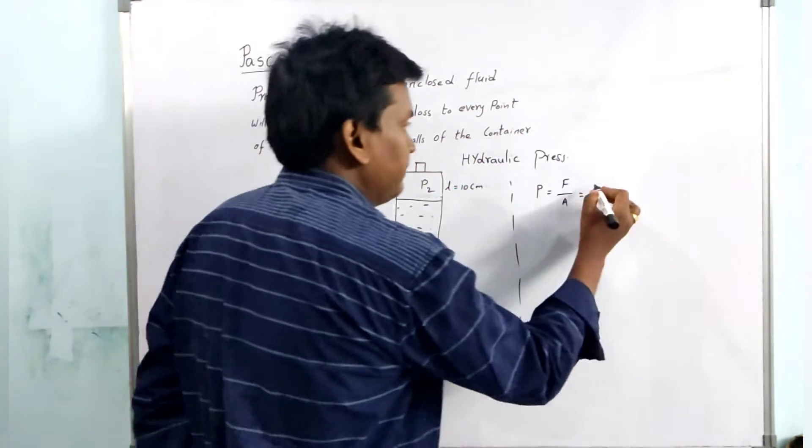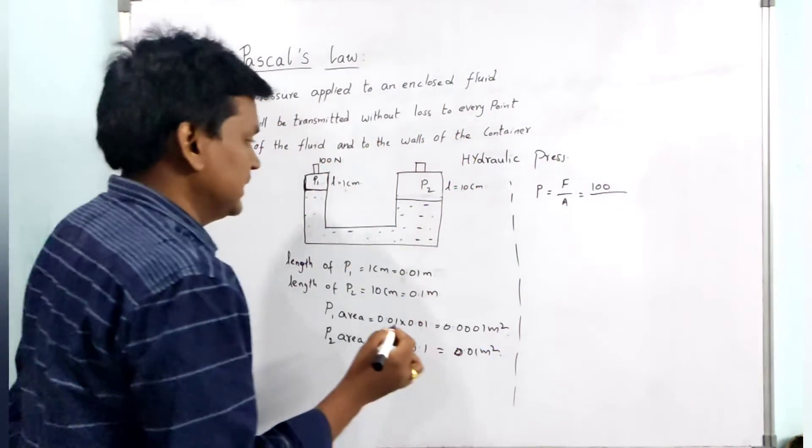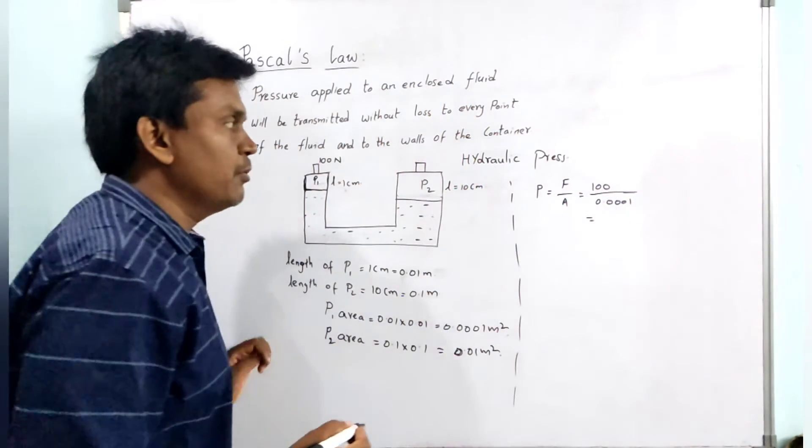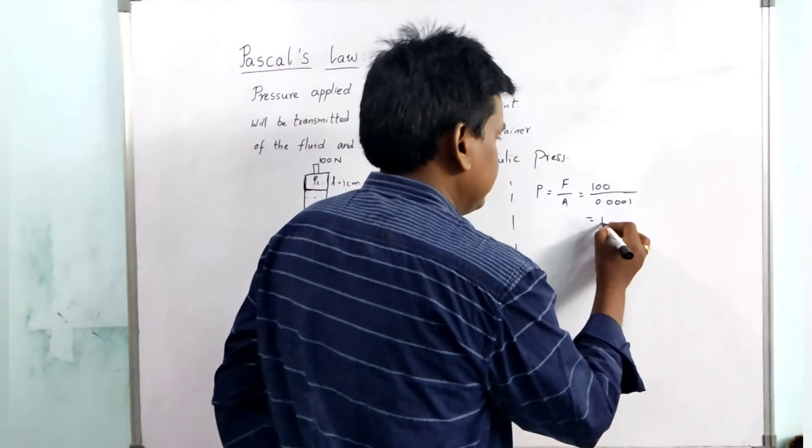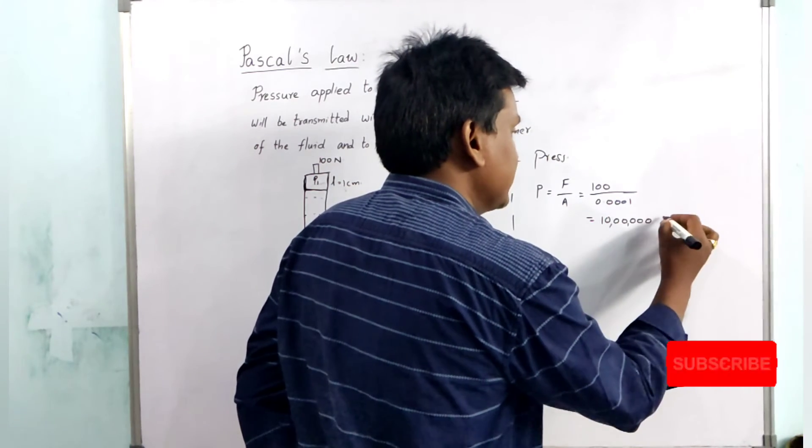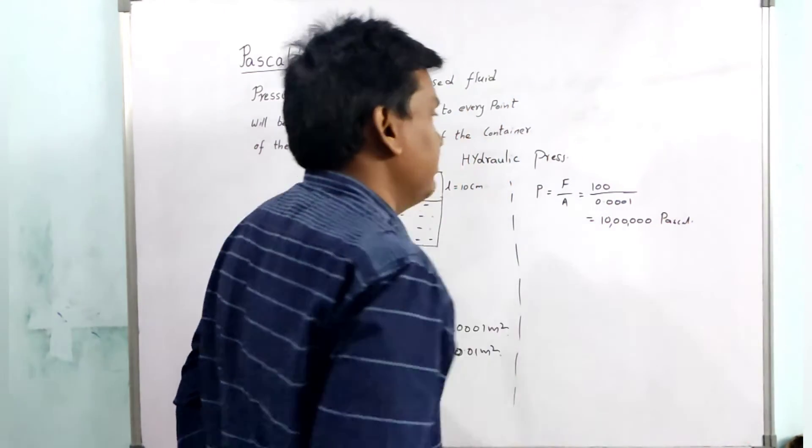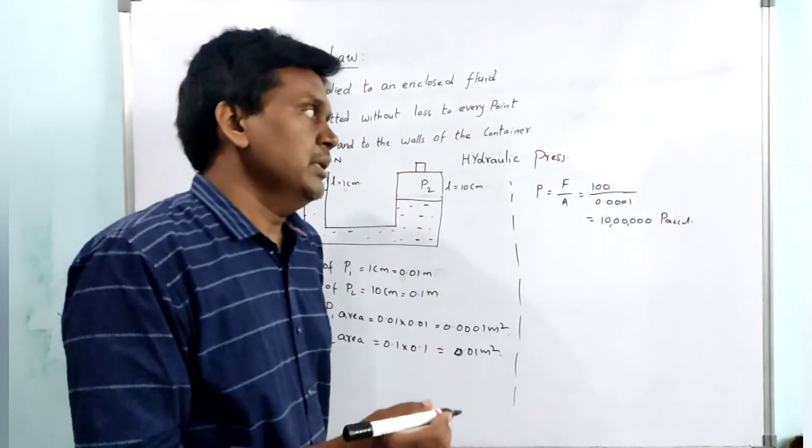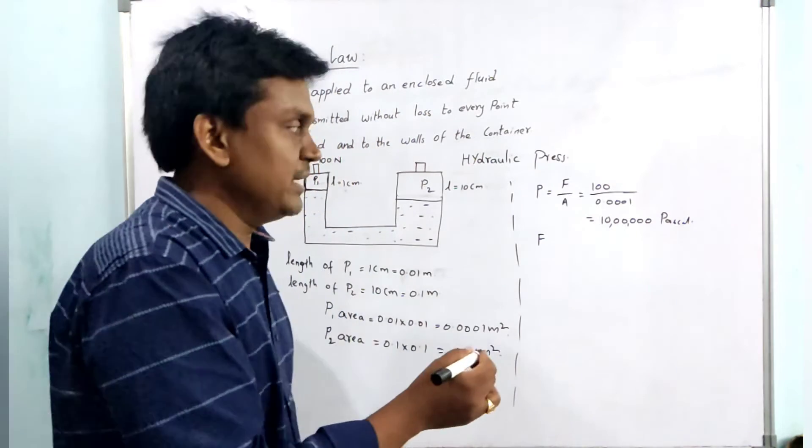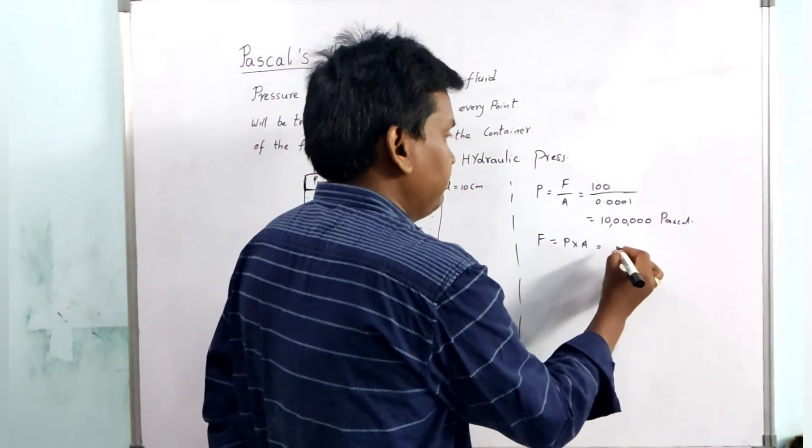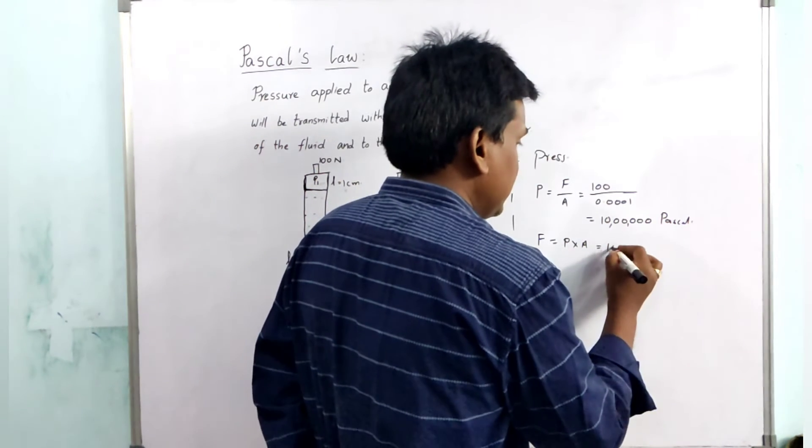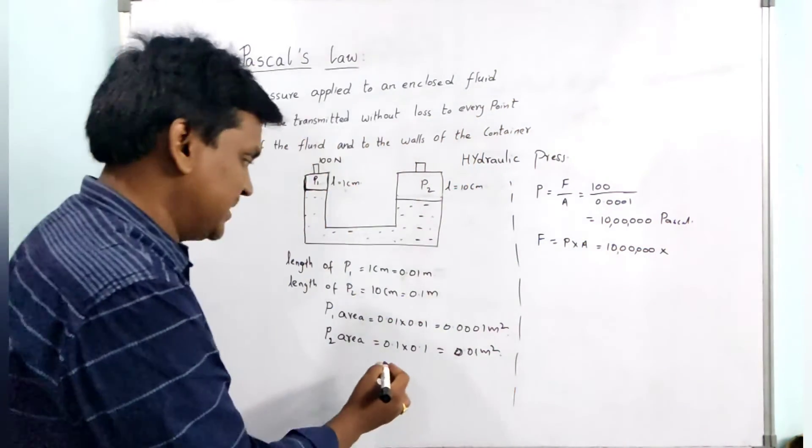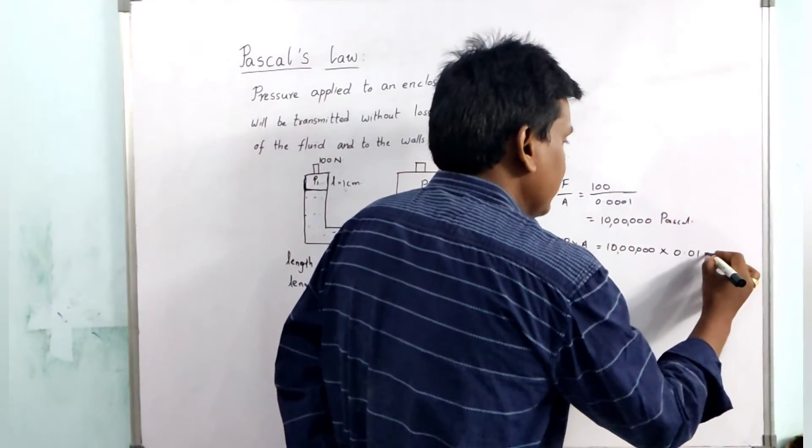Force is 100 Newton. Let us take for piston 1, so that is 100 upon 0.0001, so 100 by 0.0001 means we will get 1,000,000 Pascals. By applying the force of 100 Newton, the pressure inside this container will be 10 lakh Pascal. We can take pressure equal to force by area, and force equal to pressure times area. So what is the pressure? 10 lakh Pascals times area of piston 2, which is 0.01 meter square.